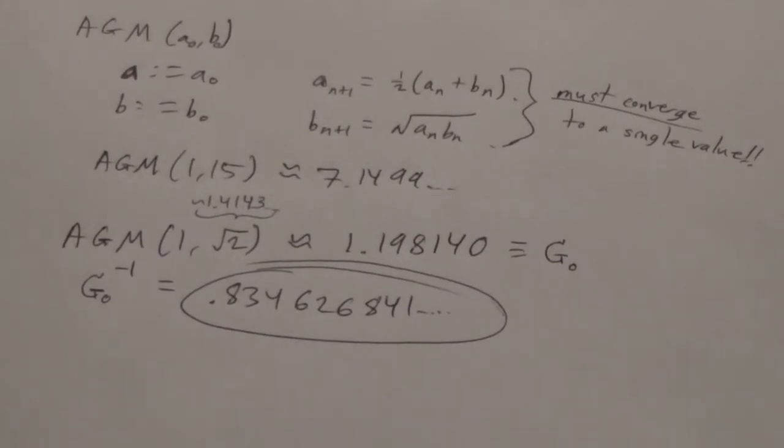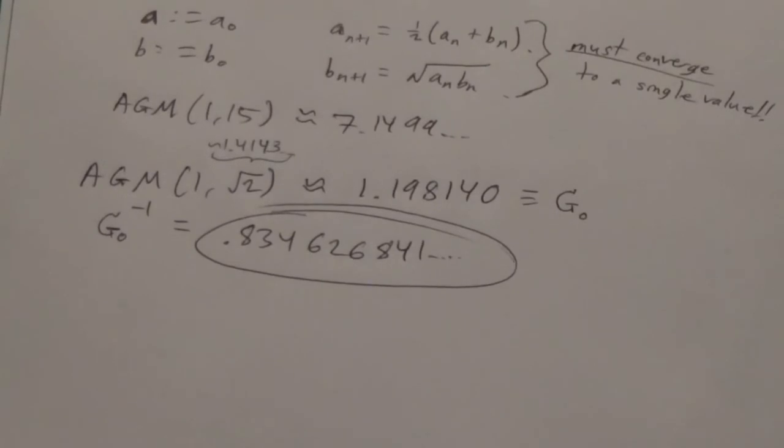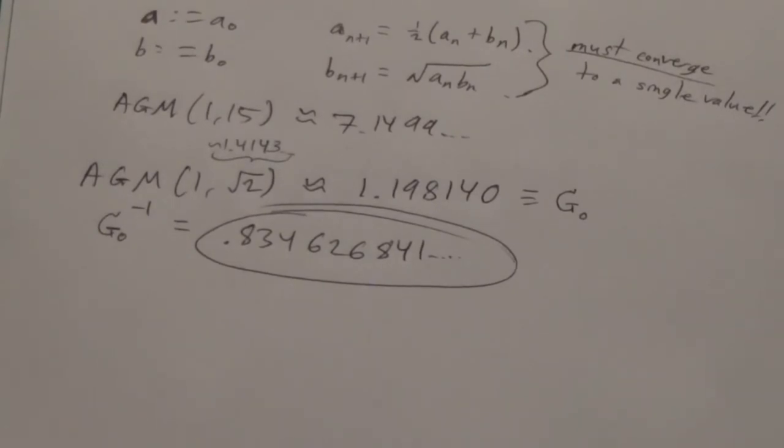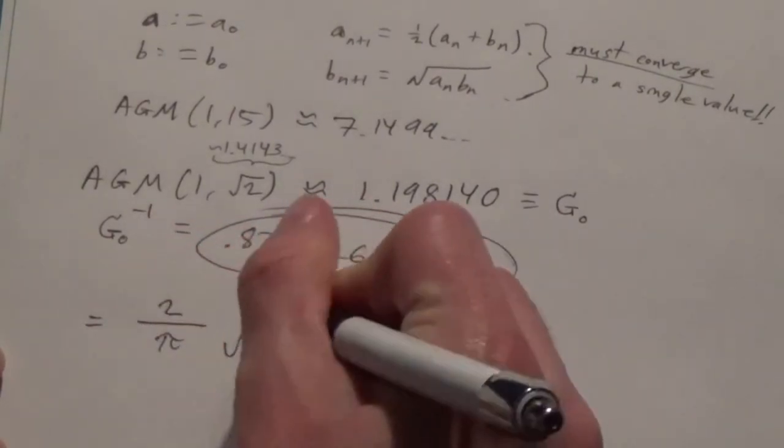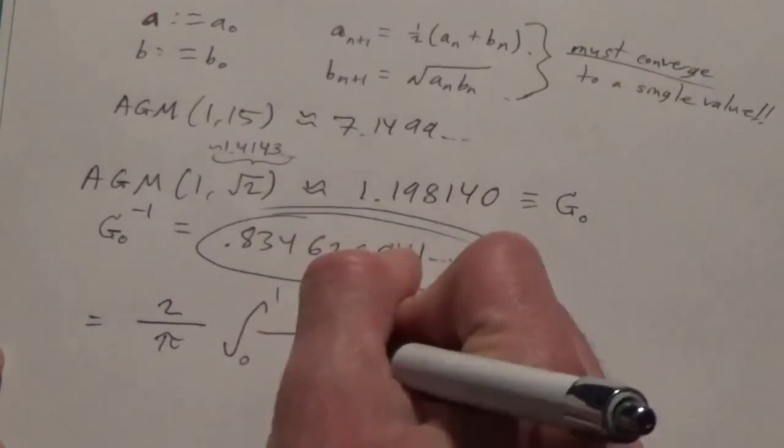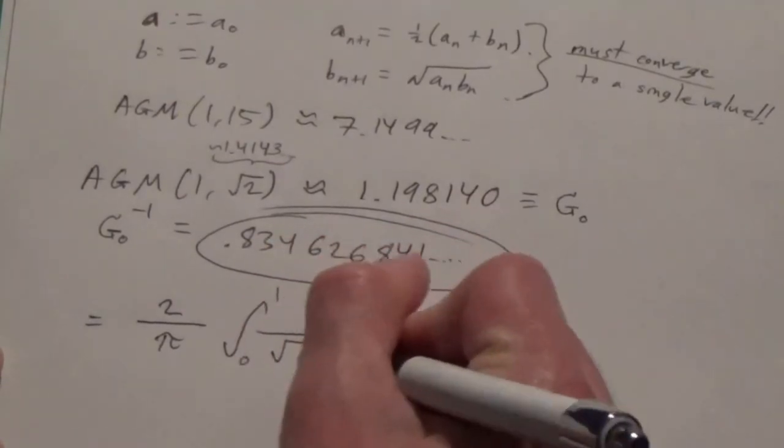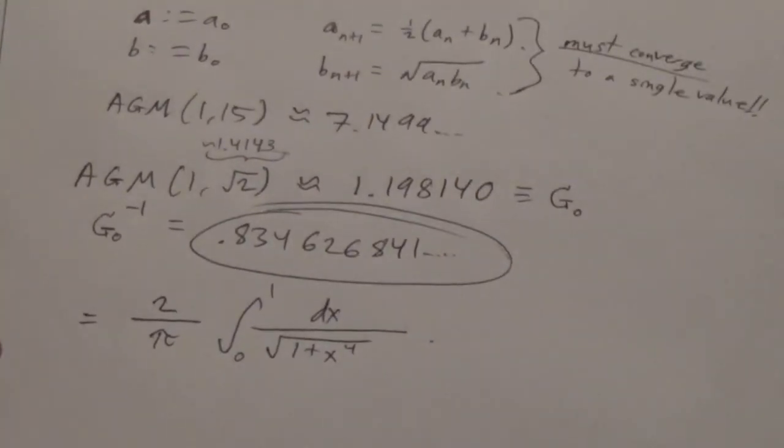Now, as it turns out, Gauss's constant has some very interesting and surprising connections to other constants. And on May 30th, 1799, Gauss discovered that this constant was in fact equal to 2 over pi times the integral from 0 to 1 of 1 over the square root of 1 plus x to the 4th dx. So if you were to estimate this, you'd get the same value, 0.834626841.